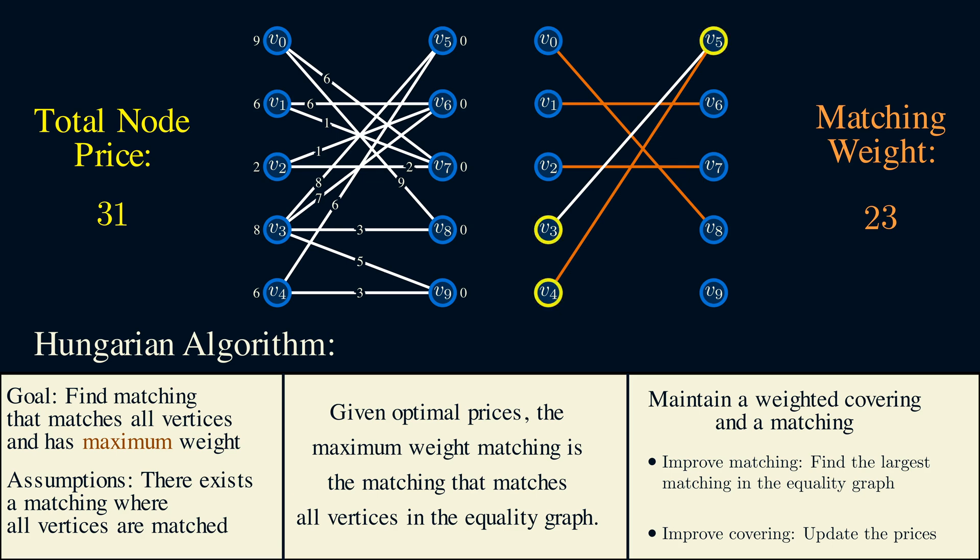The idea is to change the prices for these highlighted vertices. These are the vertices reachable from 3. What if we subtract 1 from the yellow nodes on the left, and add 1 to the yellow nodes on the right? If we do this, then notice that edges 3, 5 and 4, 5 are still in the equality graph, because I subtracted 1 from 1 endpoint and added 1 to the other endpoint, so the total hasn't changed. But it does add edge 3, 6 into the equality graph. Notice that we can't change the price by more than 1, because then the weight of edge 3, 6 will be larger than its endpoints, so it won't be a valid covering. After updating their prices, the total node price decreases to 30.